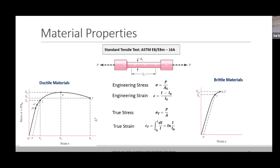All crash-absorbing structures deform a lot, and by deforming they absorb energy. The design principle is that they should be able to deform a lot — even if a car structure has crumbled significantly in a crash, that is actually a good design because that deformation gives it the energy-absorbing characteristic. Conversely, if a crash happens and there is no deformation of the material, all the energy is transferred to the occupant, which would be very dangerous.